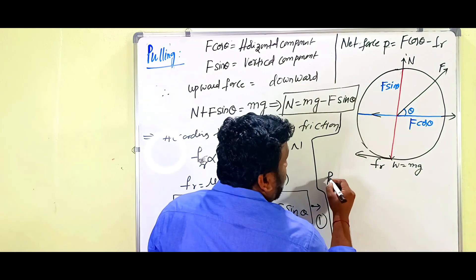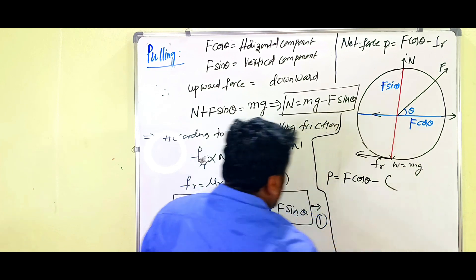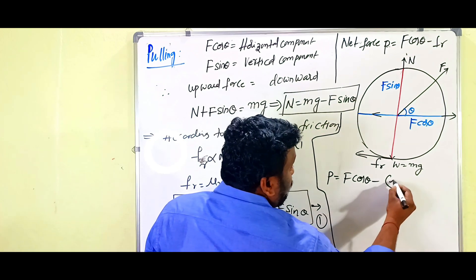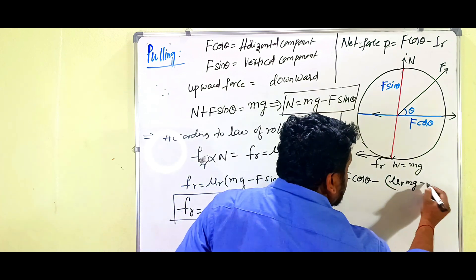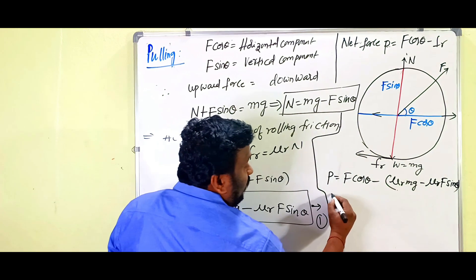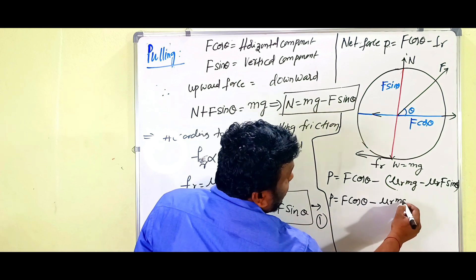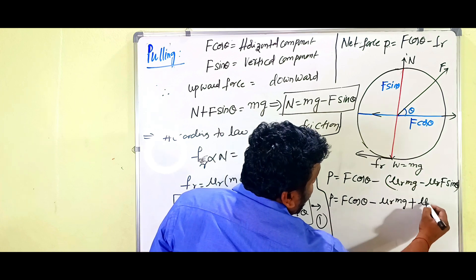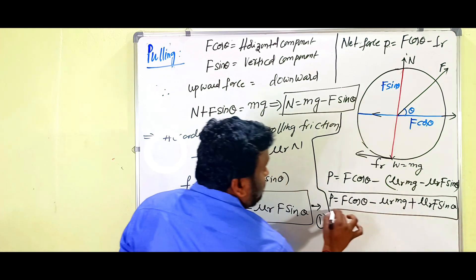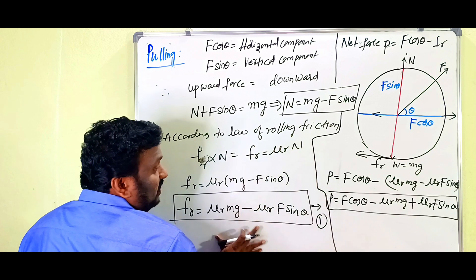Substituting the value of F_R, we get: P equals F cos theta minus (mu_R·Mg minus mu_R·F sin theta). After applying the minus sign: P equals F cos theta minus mu_R·Mg plus mu_R·F sin theta. This is the equation for the applied net force when we are pulling the land roller.